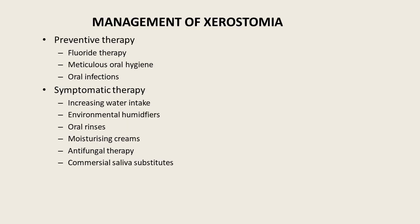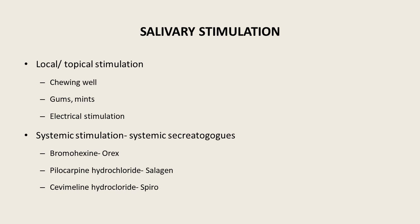In management of xerostomia, especially in Sjögren's syndrome, there should be preventive therapy and systemic therapy. Preventive therapy includes fluoride therapy, meticulous oral hygiene, and elimination of oral infections. Systemic therapy includes increased water intake, environmental humidifiers, oral rinses, moisturizing creams, antifungal therapy, and commercial saliva substitutes. For salivary stimulation, local topical stimulation such as chewing, chewing gum and mints, and electrical stimulation are used. Systemic stimulants include bromhexine, pilocarpine hydrochloride, and cevimeline hydrochloride.